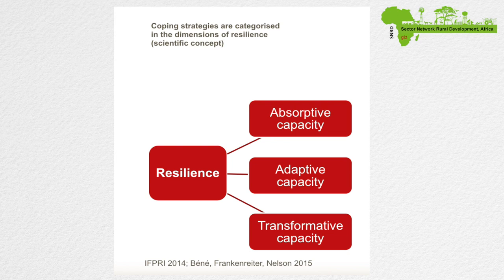Looking at the three-capacity framework, there seems to be a fourth important horizontal capacity — the ability to change behavior — supported by the project. This includes how people personally adapt to climate change and their willingness to take up different cooking techniques. This behavior change capacity seems quite important.